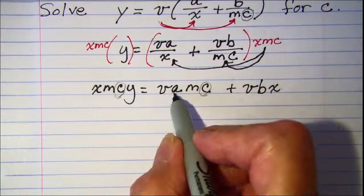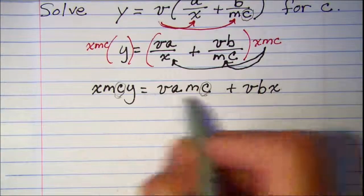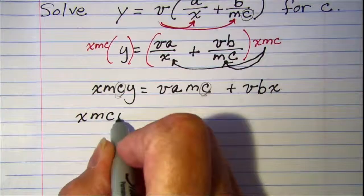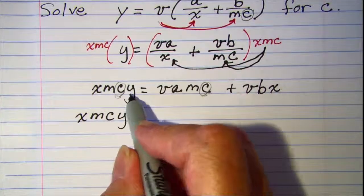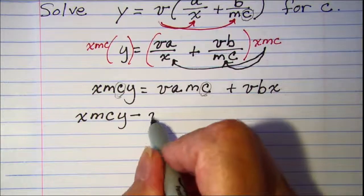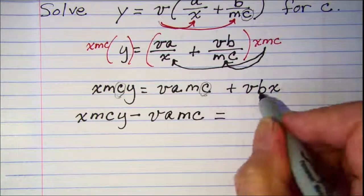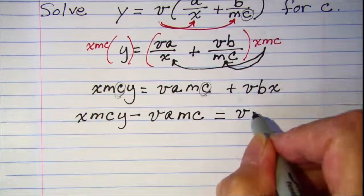Let's subtract vamc from both sides. I'll have xmcy minus vamc on the left, and vbx on the right side.